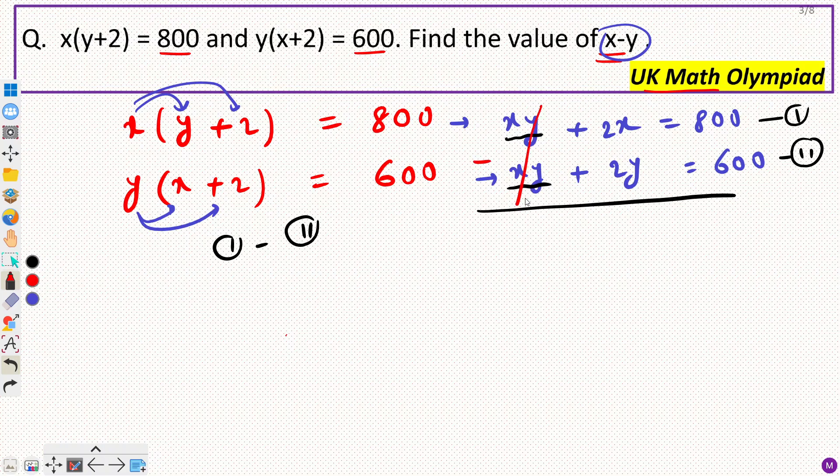So if I subtract them, then this would be cancelled and from here we will get 2 into x minus y, and here 800 minus 600, that would be 200.